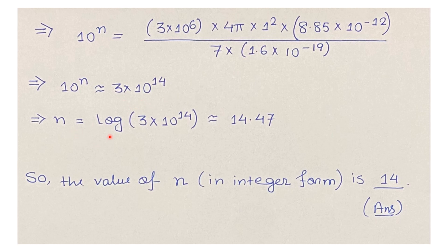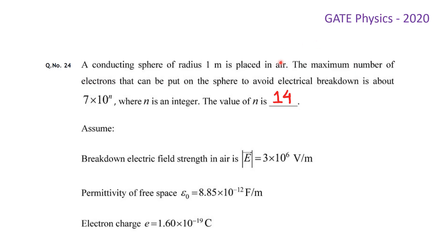So n = log(3 × 10¹⁴), which gives approximately 14.47. The value of n in integer form is 14, although the answer may lie between 14 and 15 — either 14 or 15 is acceptable. Therefore, the maximum number of electrons that can be put on the sphere to avoid electrical breakdown is about 7 × 10¹⁴, so the value of n is 14.